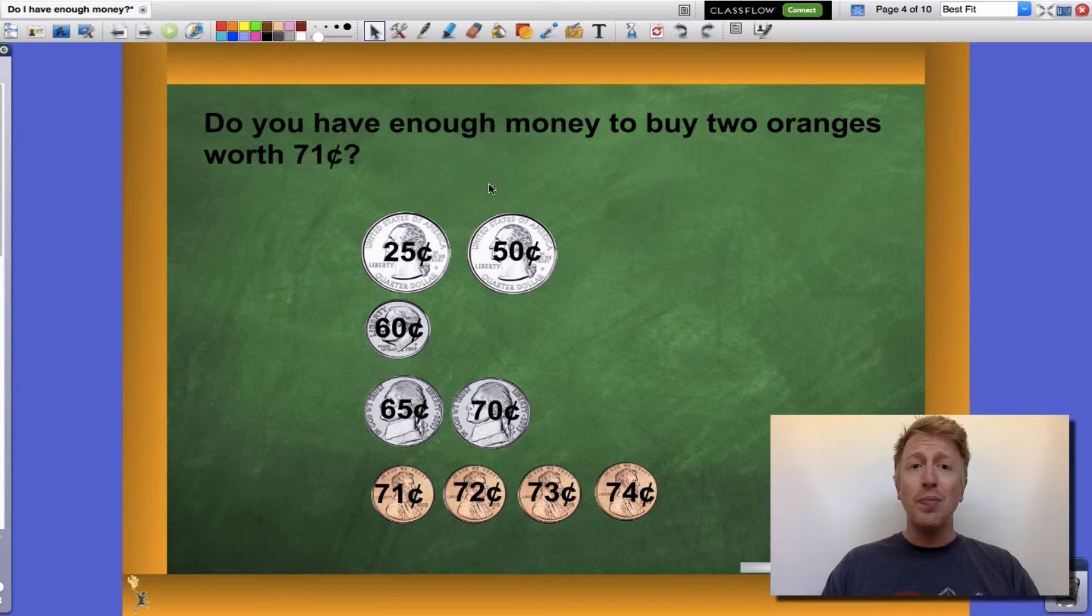Now by grouping them I put like values together. My quarters, my dimes, my nickels and my pennies. I have two quarters, each worth 25 cents. If I count by 25, I have 25 cents and 50 cents.